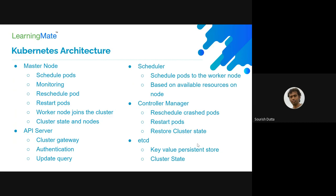The API server is the cluster gateway — a single point to interact with and manage the Kubernetes cluster. Authentication details like username and password are verified, and you can send update queries to increase the number of pods. The Scheduler schedules pods to worker nodes based on available CPU and memory. The Controller Manager restarts pods and restores cluster state. Etcd is the persistent key-value store of the cluster state.